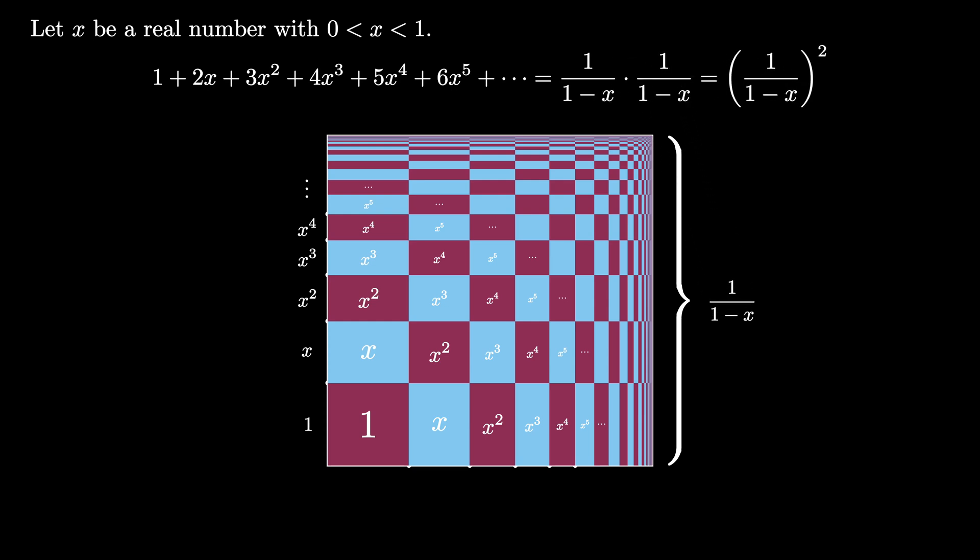Therefore, the infinite sum where n ranges from 1 to infinity of n times x to the n minus 1 must equal the quantity 1 over 1 minus x squared. And this is in fact the formula for the sum of the differentiated geometric series.